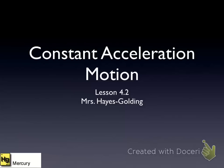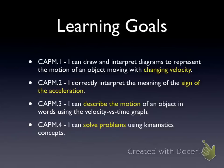Constant Acceleration Motion, Lesson 4.2. The lesson right now is for the first standard: you need to be able to represent the motion of an object with changing velocity. Let's look at that now.